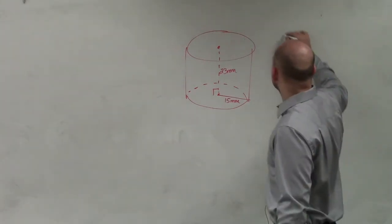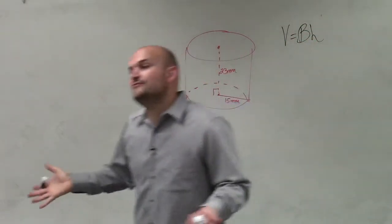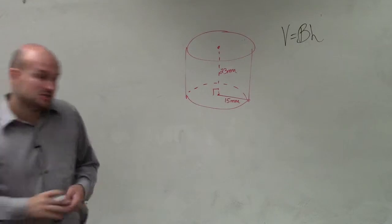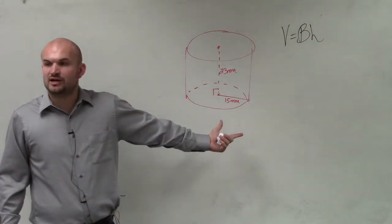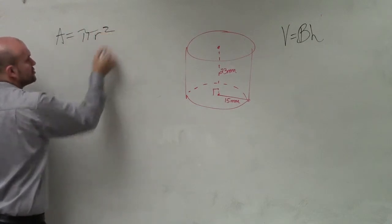So to find the volume, again, our formula equals base times height. Now we need to find the area of our base. We see that our base is circular, so the area of the base is a circle, which is pi r squared.